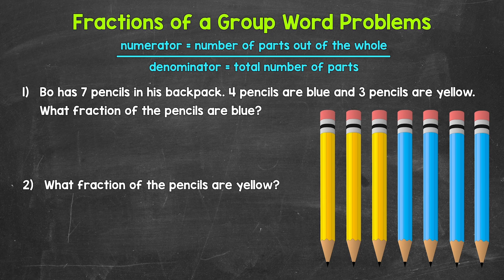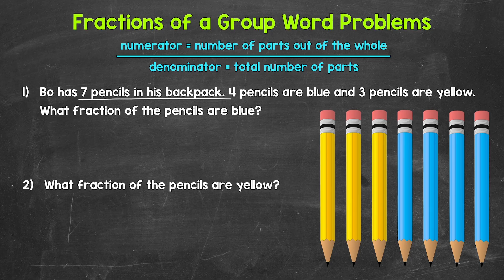Let's jump into number one, where we have Bo has seven pencils in his backpack. Four pencils are blue, and three pencils are yellow. What fraction of the pencils are blue? Let's start with the denominator, so the total number of parts that make up the whole group. Well, that's seven pencils. Bo has seven pencils in his backpack. So that's our denominator, seven pencils in total. Each one of those pencils is an equal part of the whole group.